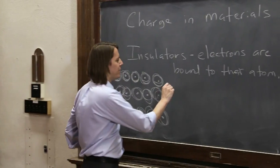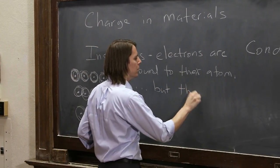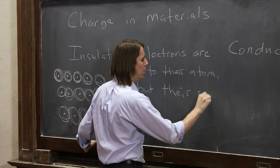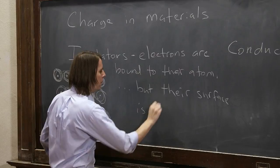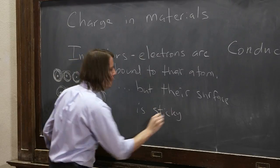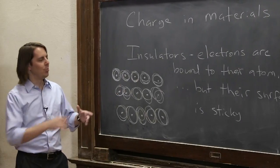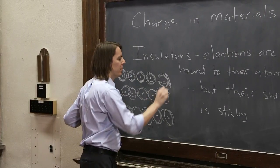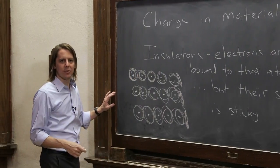They get a little bit electrostatically interesting because their surface is sticky. Like in the Teflon rod, we know the electrons can't go anywhere. But if we rub the surface, we can put extra electrons on the surface, and we can give it a surface charge. That's how we can see electrostatic phenomenon.